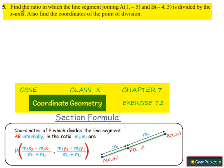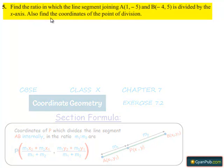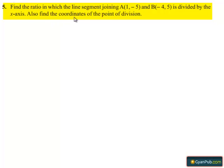Coming to question number 5: find the ratio in which the line segment joining A and B is divided by the x-axis. Also find the coordinates of the point of division. Moving on to the solution.